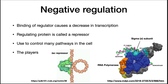We are now going to go through some general properties of these regulatory circuits and learn the terminology associated with them. In negative regulation, the binding of a regulator causes a decrease in transcription. The regulating protein is called a repressor. This type of regulation is common in the cell.